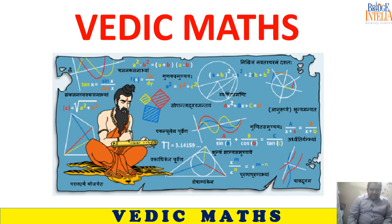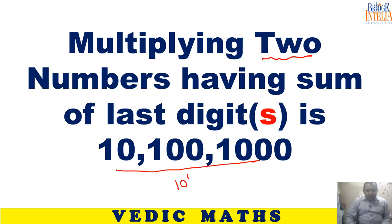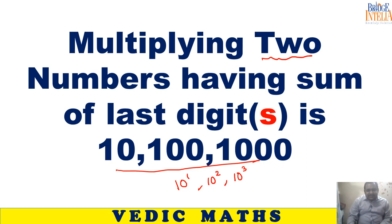Dear students, in this video we are going to discuss a trick which concerns multiplying two numbers having a sum of last digits equal to 10, 100, or 1000 — basically powers of 10. We will learn a shortcut where you multiply two numbers having a special property: the sum of their last digits should be equal to 10, 100, or 1000.